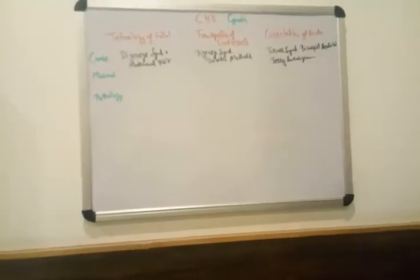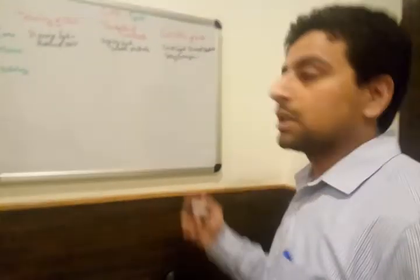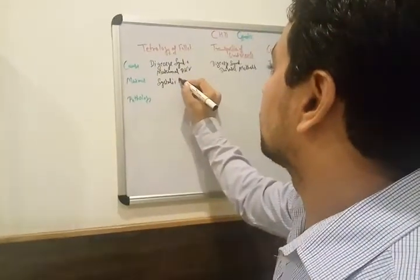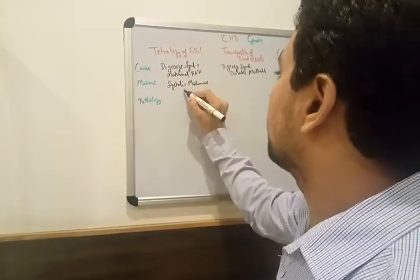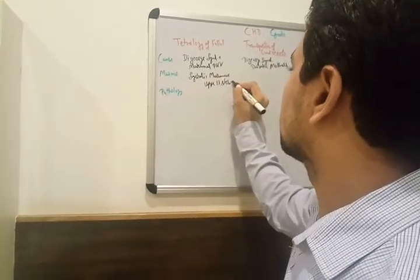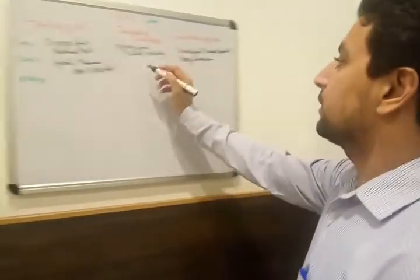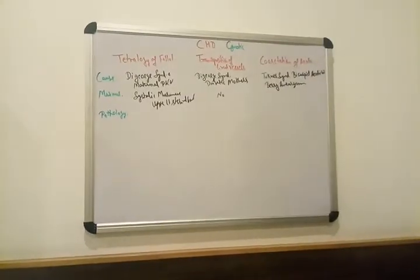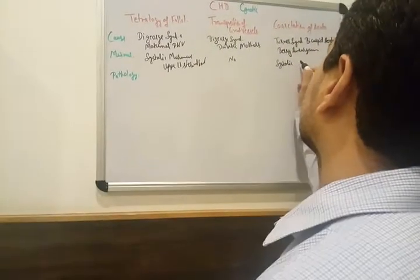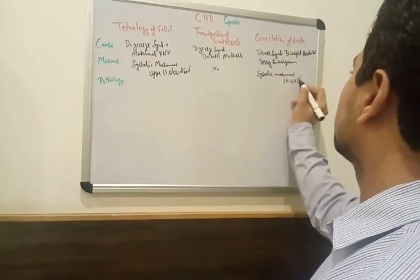In tetralogy of Fallot, there is a systolic murmur on the upper left sternal border. In transposition of great vessels, no murmur is heard. But in case of coarctation of aorta, there is also a systolic murmur, heard in the left axilla.